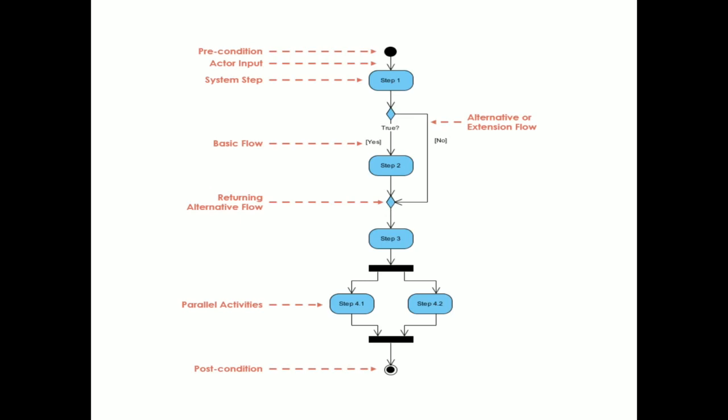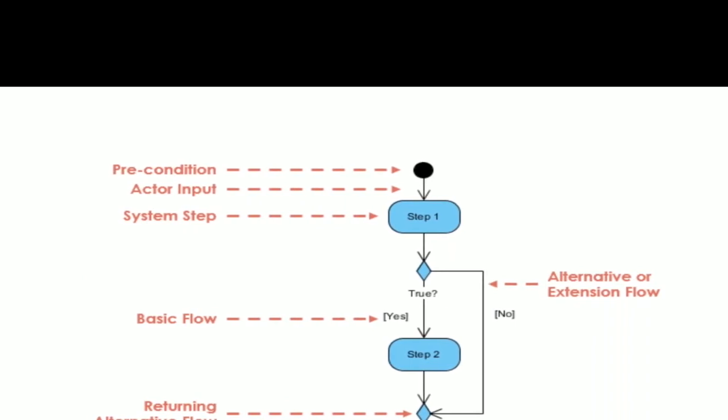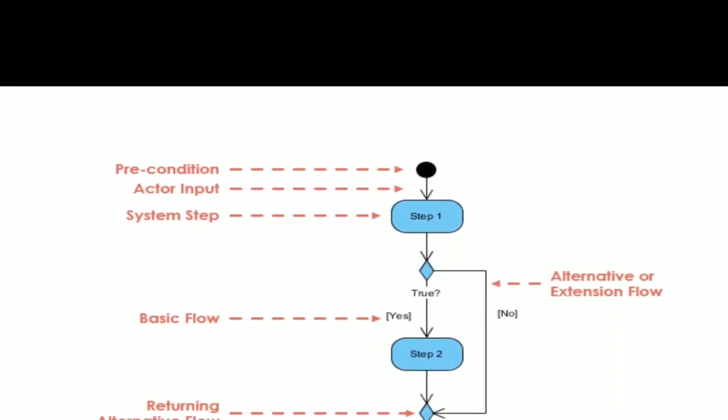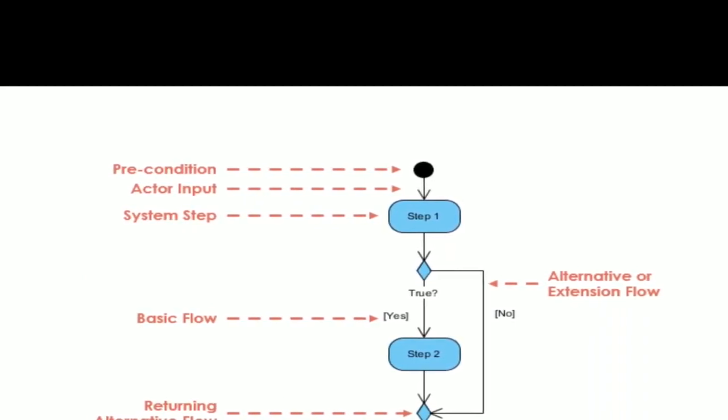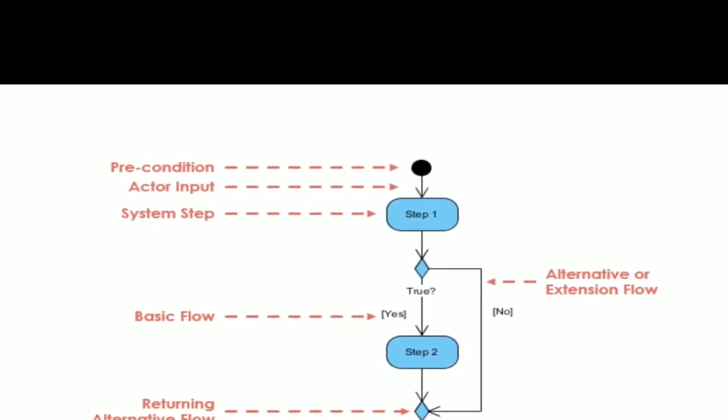Now see, this is the diagram for activity. You can see here initially there is the start. It is a precondition. Then control flow by arrow, called action input. Then actual activity in step 1, this is the system step.